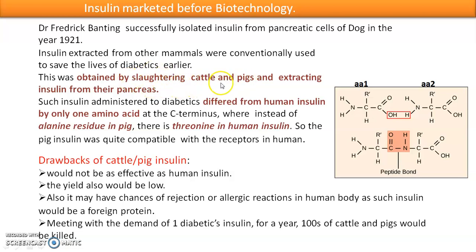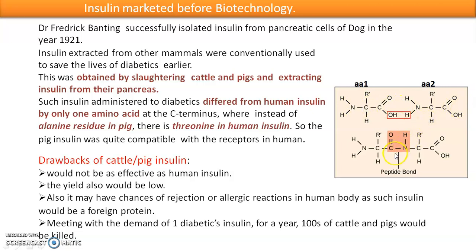The animals were butchered — primarily for meat — and their pancreatic cells were used to squeeze out and extract insulin. The insulin produced in this manner differed from human insulin by only one amino acid at the C-terminus. For those unfamiliar with C-terminus: in a protein, amino acids are linked by peptide bonds — formed when water is removed from the carboxylic end of one amino acid and the amino group of the next.